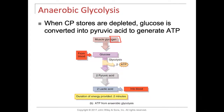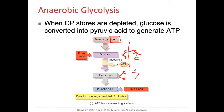Muscle glycogen can be broken down into glucose. Glucose, which is a six-carbon sugar, can be broken down. You break that bond, and now you get pyruvic acid, which is two three-carbon sugars.